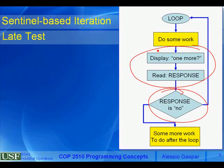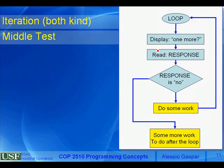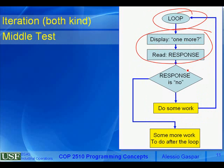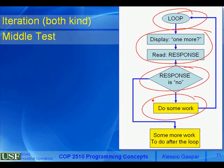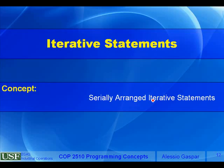In the early test sentinel version, you first display something and read a response outside the loop, so the first thing inside the loop is testing that answer. If the original response was 'no,' you exit immediately. With a middle test, the first half of the loop gets the user's decision, then a test, then the work is done if appropriate. By now, you should see all the possibilities and degrees of freedom when writing loops.